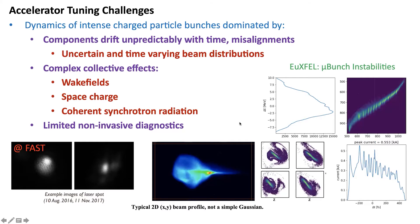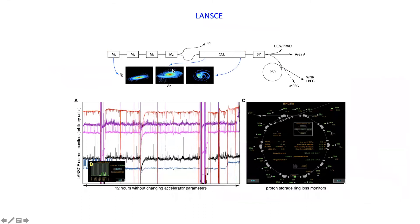This is actually data from the European XFEL. All of that makes it difficult to predict things. Even if you have the perfect model, sometimes you can't even have the right initial conditions to stick into it. At LANSCE, operators look at loss monitors — just bumps showing how much beam is hitting walls of the accelerator. Here's some current monitor readings over a 12-hour time period where supposedly nobody touched anything. This isn't special to LANSCE; things are just noisy and drifting around with time.